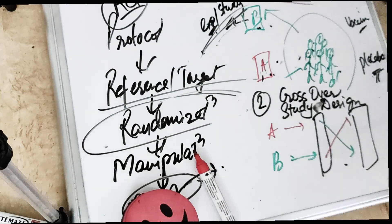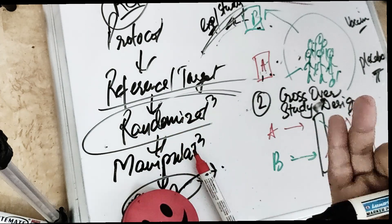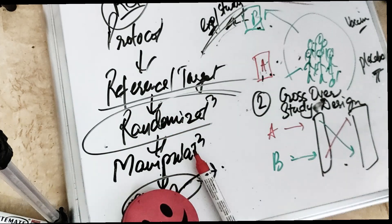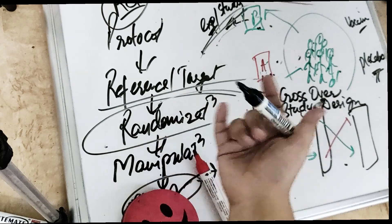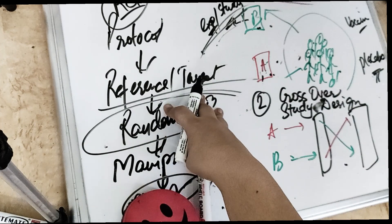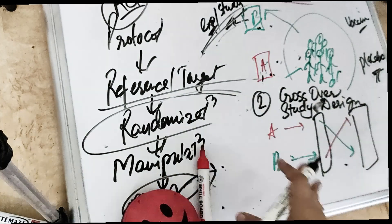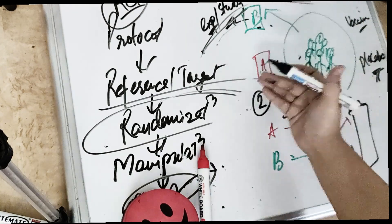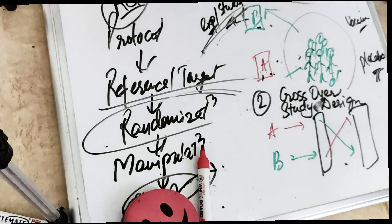The randomized controlled trial has many types: it can be a clinical trial, a preventive trial, or a risk factor trial. The other type is the non-randomized controlled trial, in which the groups are not selected randomly, and we check the association between the two groups. This covers our experimental epidemiology.